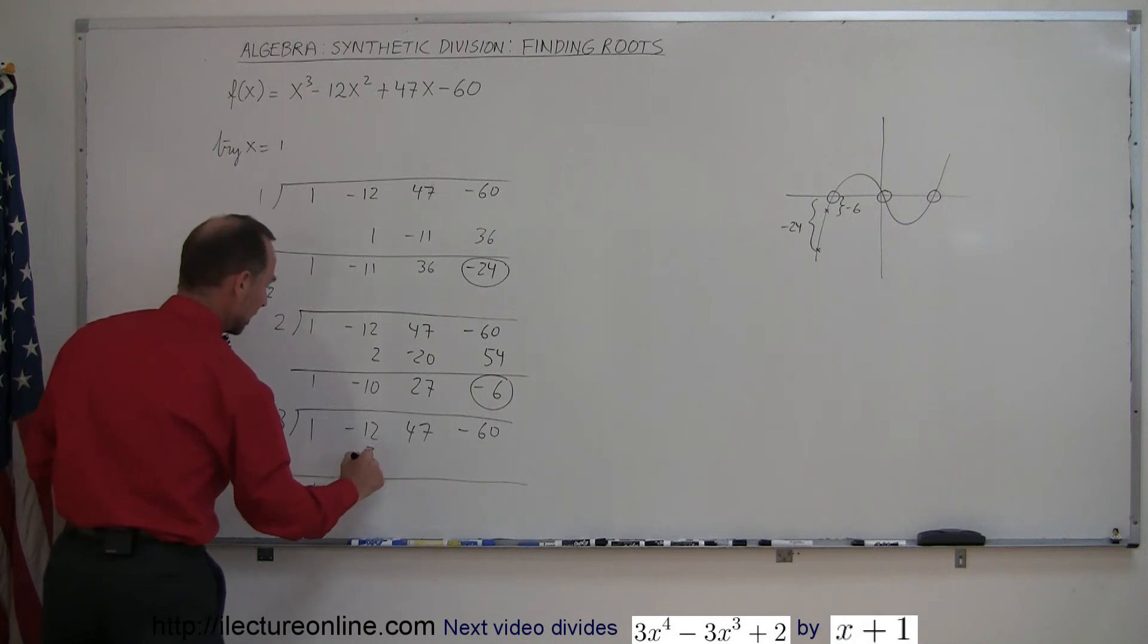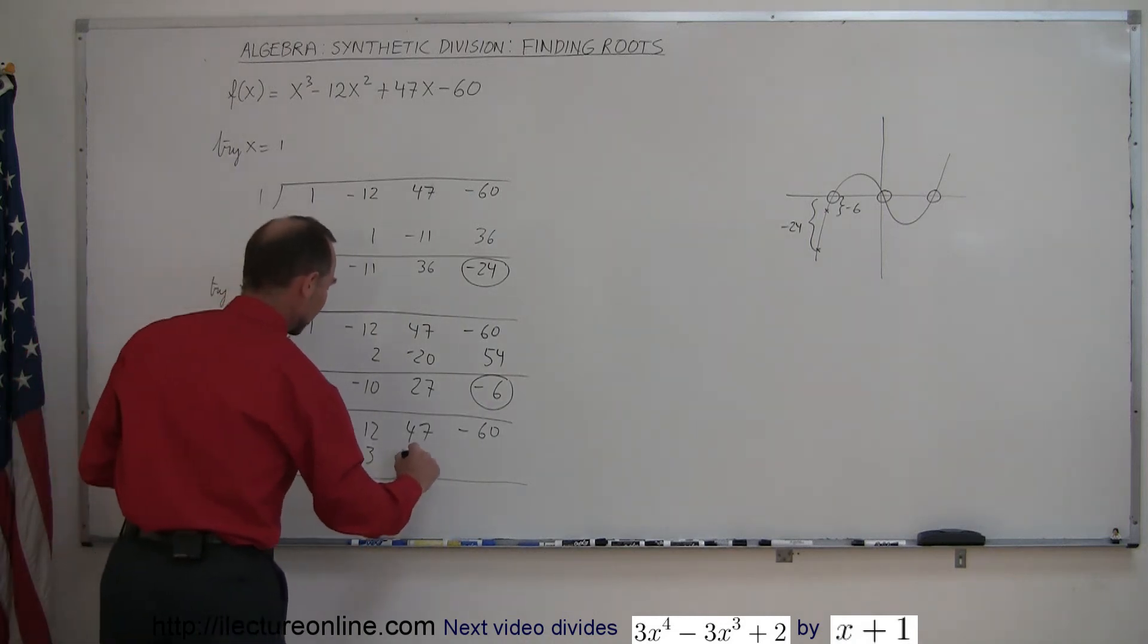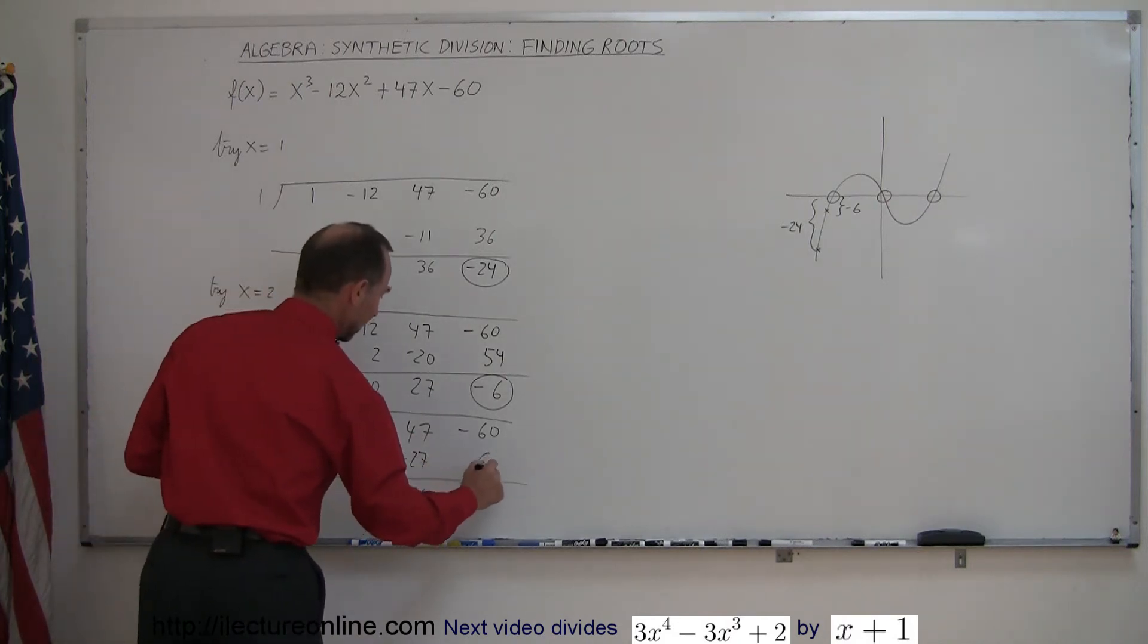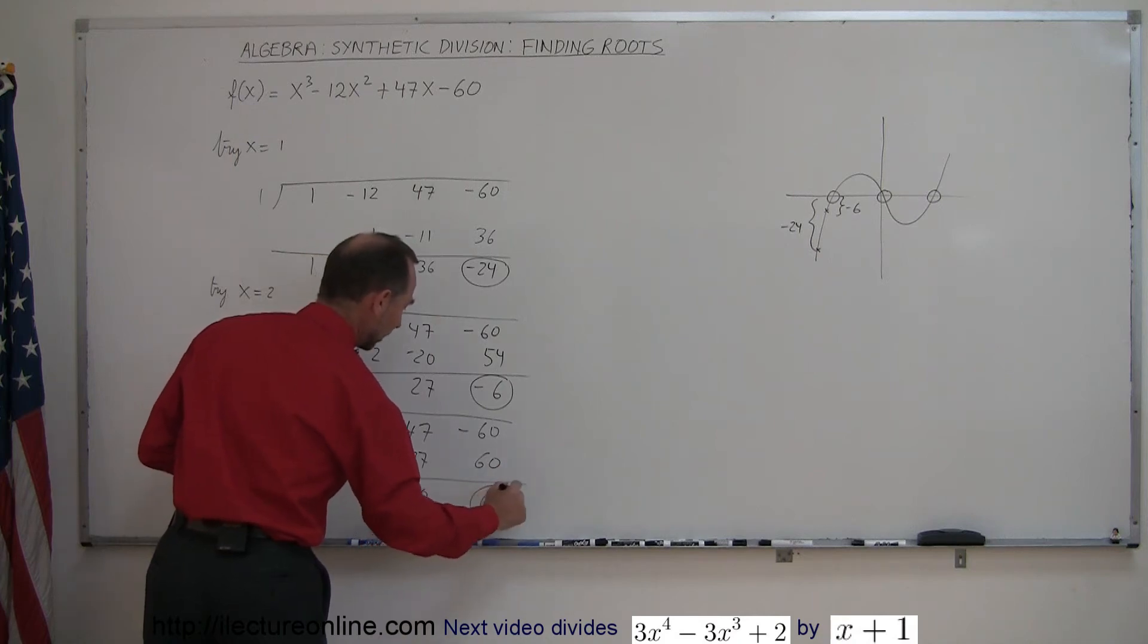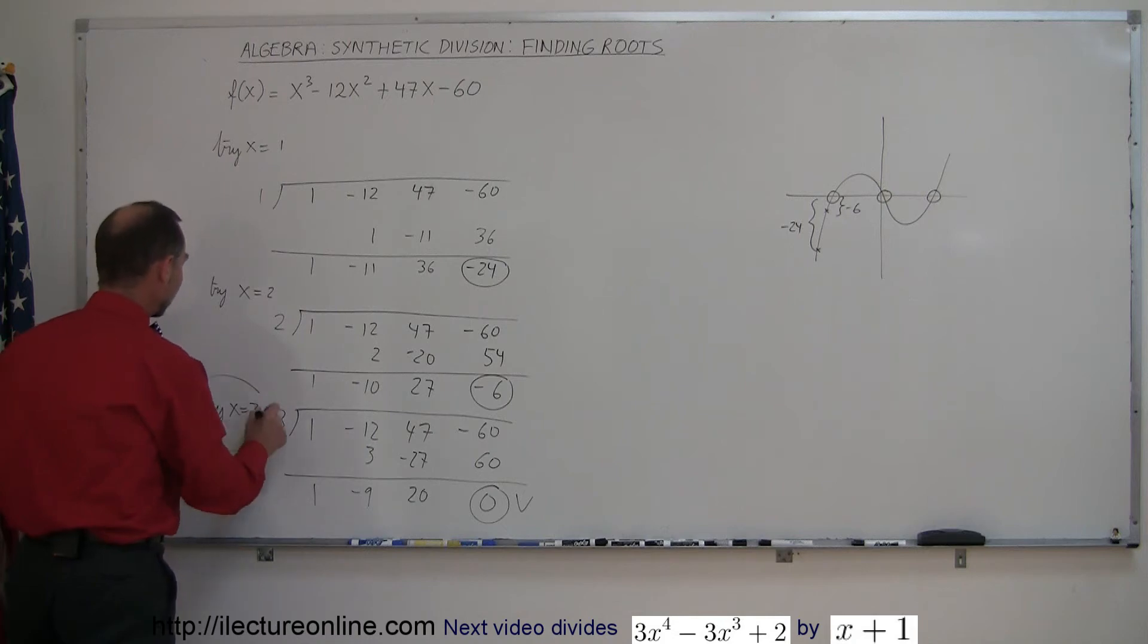1 times 3 is 3. Add those together, you get minus 9. Minus 9 times 3 is minus 27. Add those together, you get a positive 20. 20 times 3 is 60. Add those together, you get 0. Bingo! Zero remainder, which means we found our first root, x equals 3.